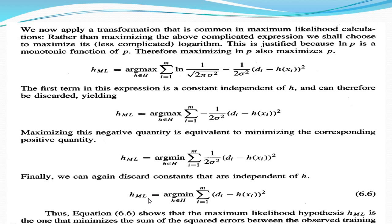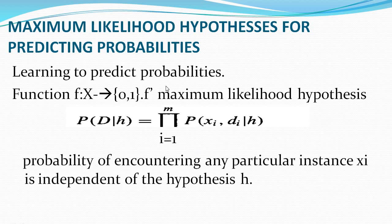With these assumptions — normal distribution, all hypotheses having equal probability, and training data being randomly chosen instances with normal distribution — the output is called the maximum likelihood hypothesis. One more thing to consider is the maximum likelihood hypothesis for predicting probabilities. To predict probabilities for learning, we need to find out p(D|h) using this formula, where p(xi) is the instance and d(i)|h is the desired output over the hypothesis.